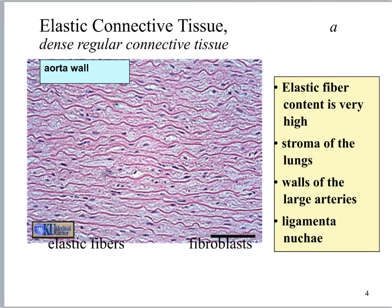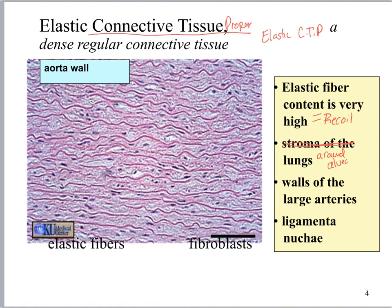Here we are looking at elastic connective tissue. It is really important to always include the full name — elastic CTP. We have elastic cartilage too, and people mix them up, so make sure you specify connective tissue proper. Remember, elastic fibers recoil. So the function of elastic connective tissue proper is recoil. You'll find these around the alveoli of the lungs to help those little sacs reduce back to their normal shape after breathing, in the lamina of the large arteries, and in the ligament of Nuchae. Try to remember those two locations.